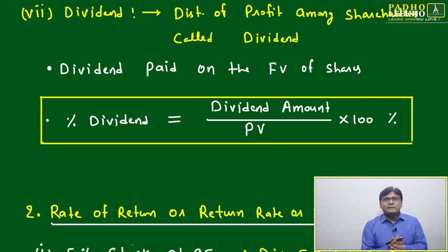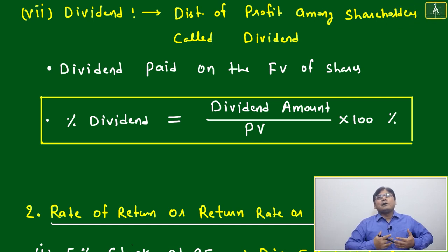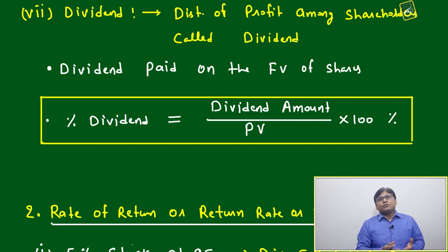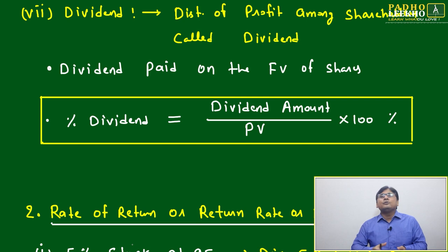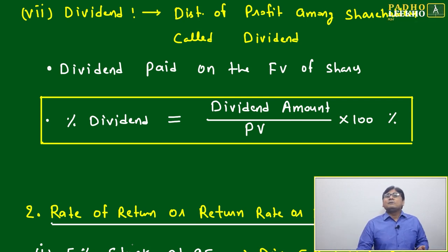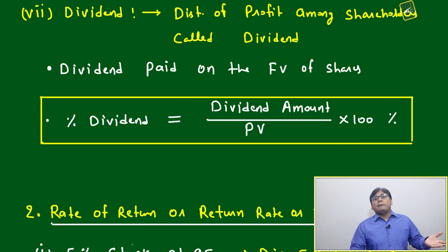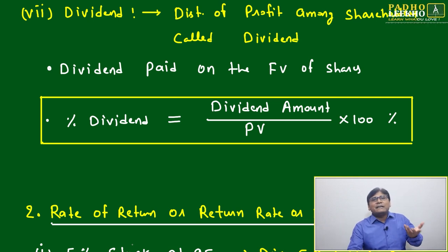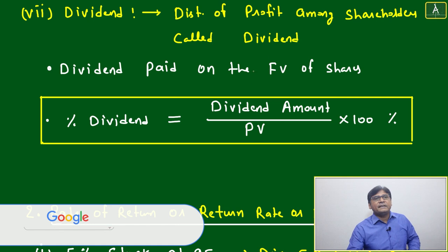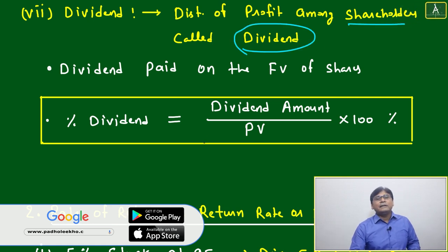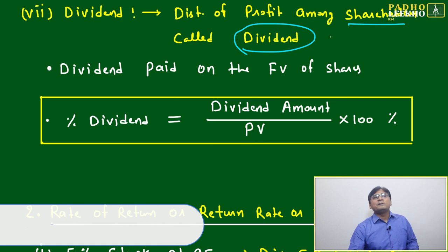If a company is earning profit, it will want to share that happiness with its shareholders. It's like in a family — if one person has got some success, you bring sweets, distribute them, enjoy and celebrate together. The same way, if a company is getting profit, it wants to share that enjoyment with shareholders by distributing dividend. That is called dividend — distribution of profit among shareholders.